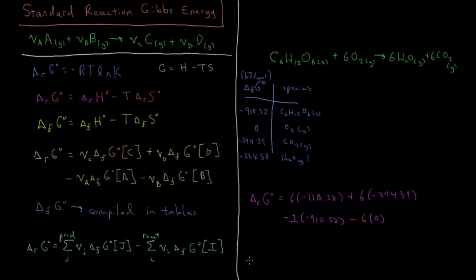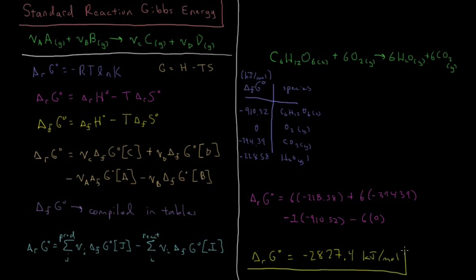Plugging these into a calculator gives a standard Gibbs energy of reaction for the combustion of glucose of approximately minus 2874 kJ/mol. This is a highly favorable reaction, as shown by the very large negative standard Gibbs energy. Under standard conditions — concentrations of one molar or one bar pressure — combustion is a very favorable process: once it has the initial energy to get started, it happens quickly, releases a lot of heat, produces a lot of entropy, and the standard Gibbs energy of reaction is very, very negative.